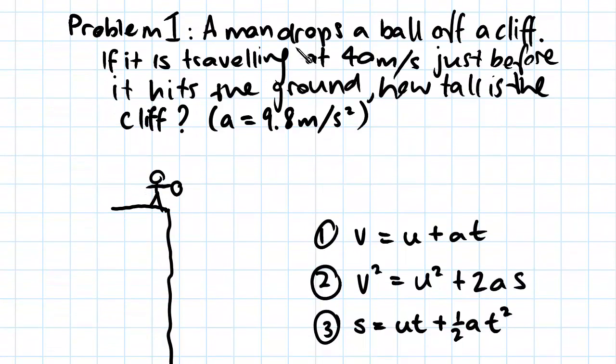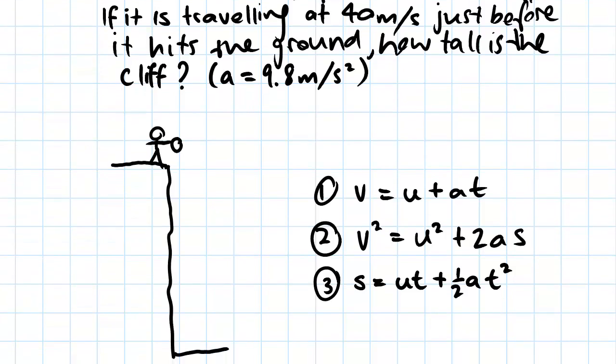We have a problem where we've got a man dropping a ball off a cliff. We've been told that if the ball is traveling at 40 meters per second just before it hits the ground, how tall is the cliff? We've been given acceleration is constant at 9.8 meters per second squared, which is the acceleration due to gravity.